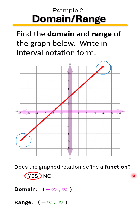So anytime you have a line like this, it doesn't matter whether it has a positive slope or negative slope. Any line except a vertical or horizontal line will have a domain and range from negative infinity to positive infinity.